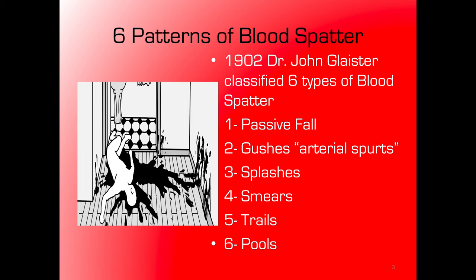Trails are kind of the hodgepodge pattern — when we talk about a trail in blood spatter, it means you can track where someone went from point A to point B, and along the way they may leave behind any combination of the other five blood spatter patterns. Pools occur where consistent bleeding has happened in a stationary spot for some time and a lot of blood has built up in one location. If this is review, great — if not, please go back to the second blood and blood spatter lecture.